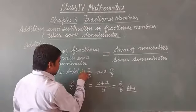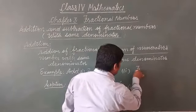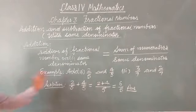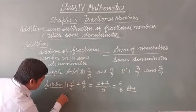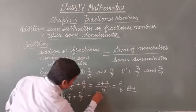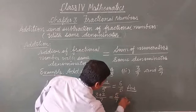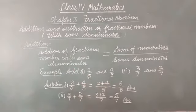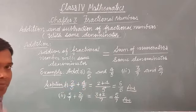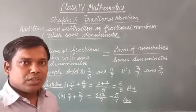Now suppose we have two numbers: 3 by 7 and 2 by 7. This is the second example. You will write 3 by 7 plus 2 by 7, which is equal to 3 plus 2 by 7, and it will come to 5 by 7. So, means if two fractions are given with the same denominator and we ask you to add, you will add like this. I hope addition of two fractions with same denominator is clear to you.